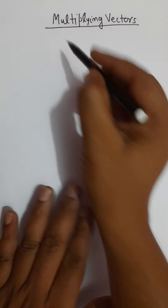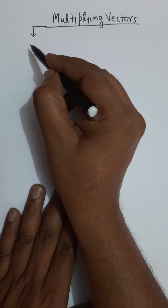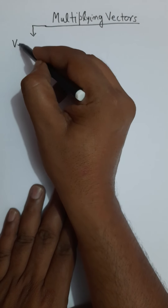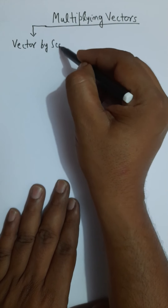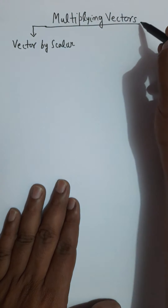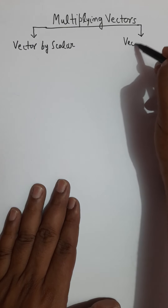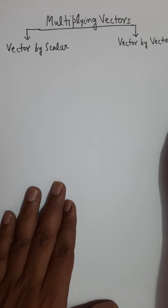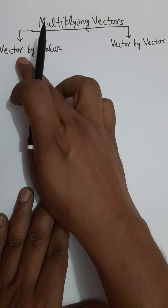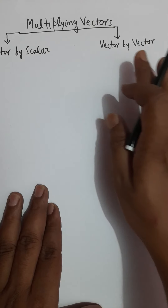Broadly speaking, multiplying vectors falls under two categories. Category one is multiplying a vector by a scalar, and category two is multiplying a vector by another vector.